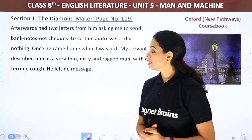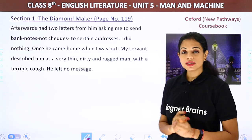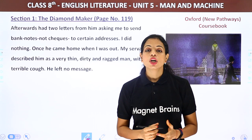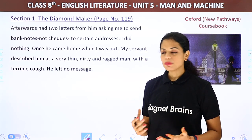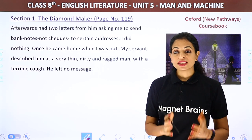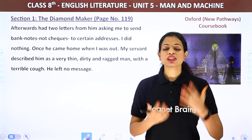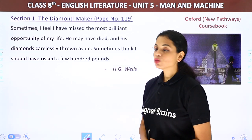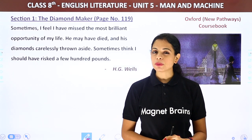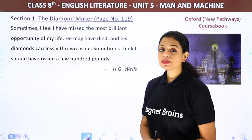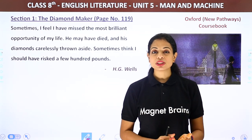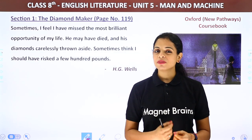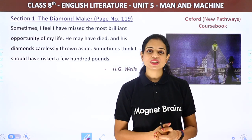Once the stranger came to the narrator's home when he was out. His servant described him as a very thin, dirty and ragged man with a terrible cough. He left no message. 'Sometimes I feel I have missed the most brilliant opportunity of my life. He may have died, and his diamonds carelessly thrown aside. Sometimes I think I should have risked a few hundred pounds — it could have changed both our lives.'